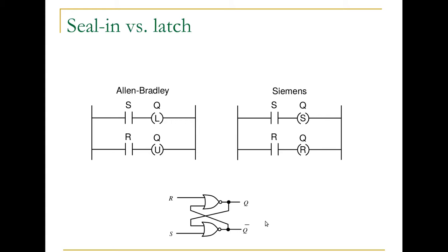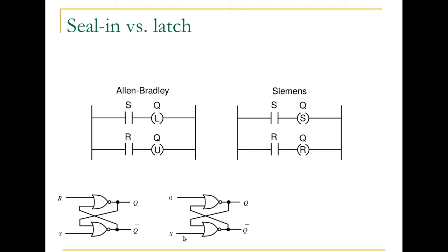A seal-in is like a set-reset in that it keeps the value of Q once S has been set to one — Q stays one no matter what happens to S after that. But the difference with seal-in is that there's no reset signal. So it's like a latching circuit but reset is always zero.